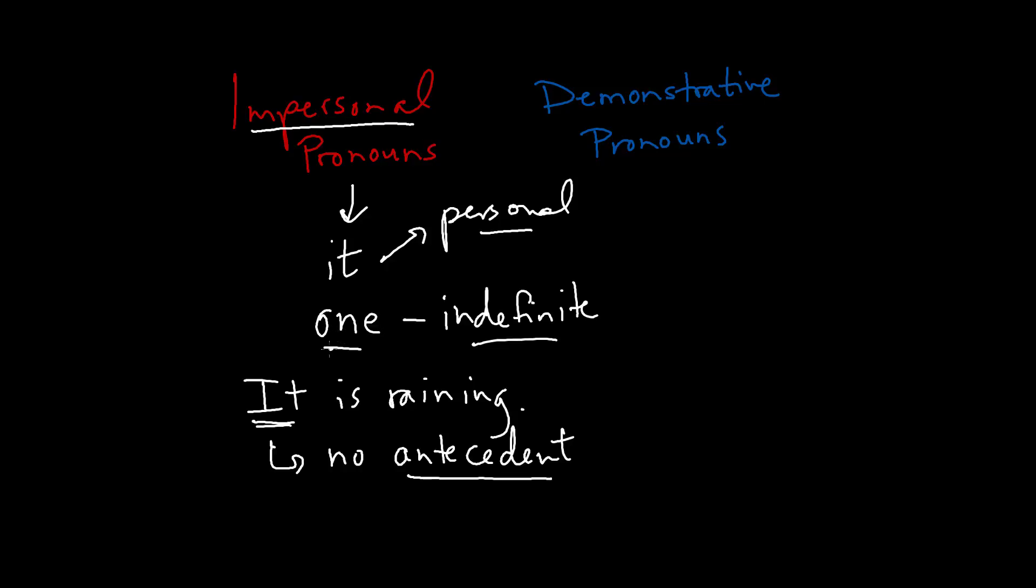When we use one in this sense, then what we mean by one is a person. So you could write something like, one might argue, and you sometimes see that in an academic context, but often it also sounds a little bit pedantic and as if you're trying to show off. So try to avoid it unless necessary. That's it for the impersonal pronouns.